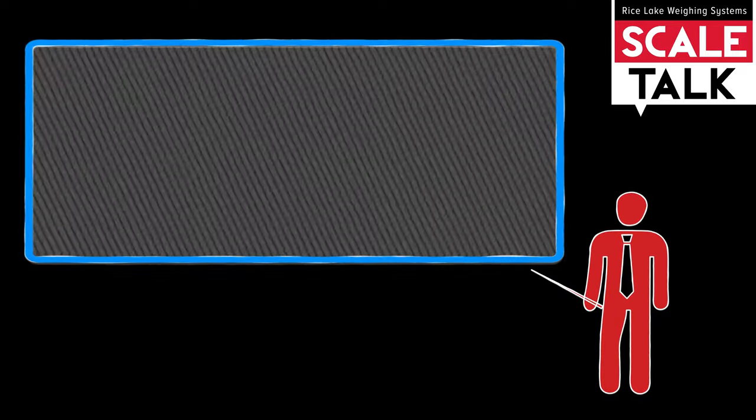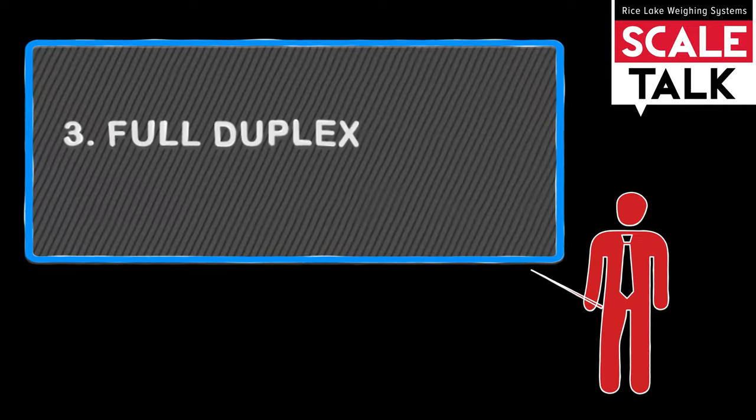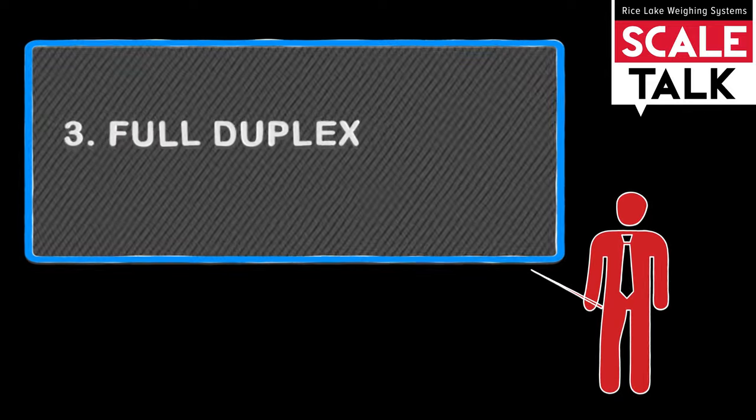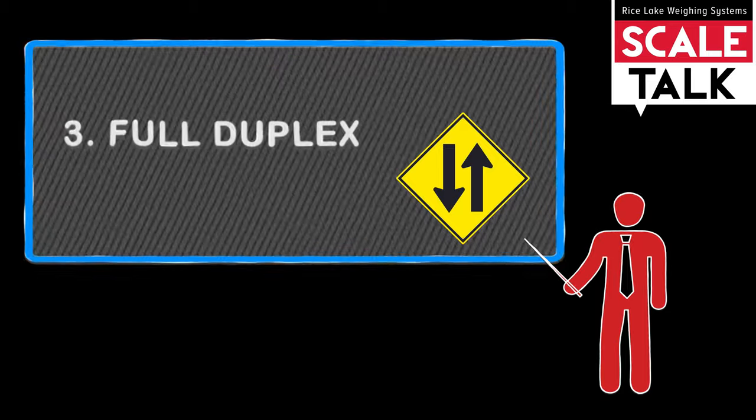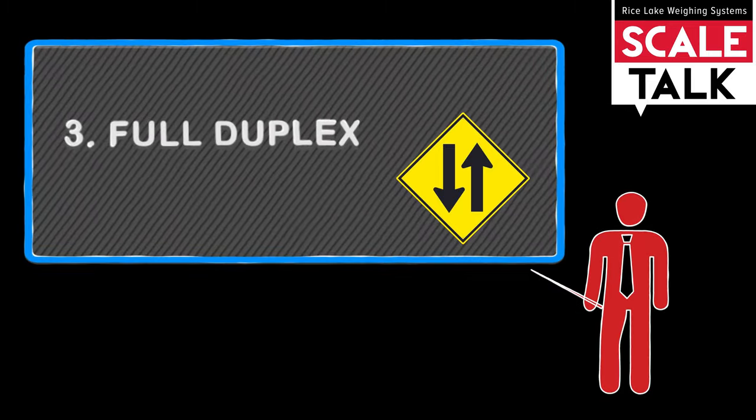The third type of communication is full-duplex. This form of communication can send information in both directions, transmitting and receiving, simultaneously.